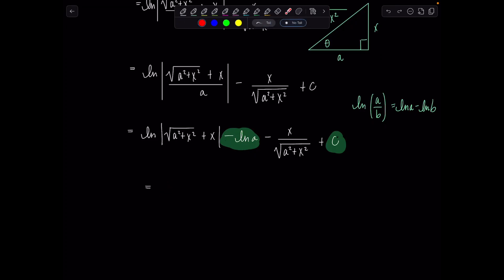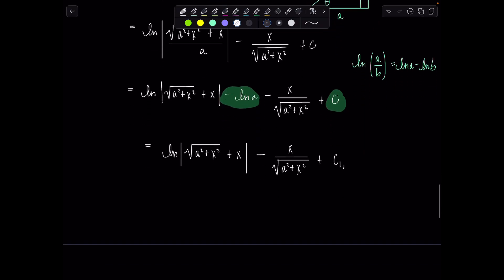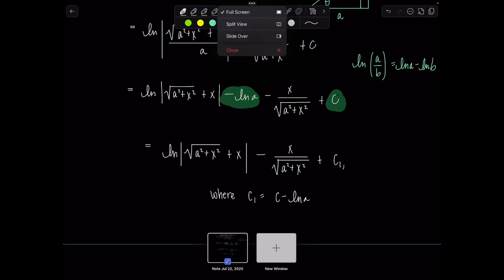Okay. So then now we can write everything as ln absolute value radical a squared plus x squared plus x minus x over radical a squared plus x squared plus c1. And then we have to tell the people who this c1 is. C1 is my old c minus ln of a. Now we can box this with pride.